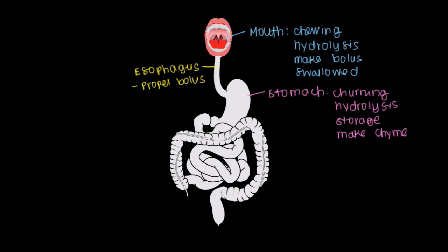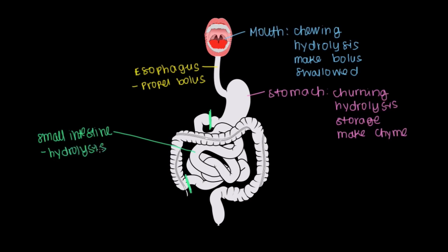Moving on now to our intestines. Starting from about this point here, we get our duodenum, and then it circulates around, ending up here. Everything in between I'll group together for now as the small intestine. There are three parts to this, which we'll cover in a subsequent video, but the main functions achieved here are hydrolysis and also the absorption of nutrients. This is kind of the first part of your GI tract where you're finally taking in some of the breakdown food products and using them for nutrition.